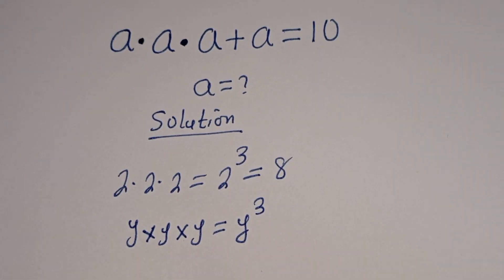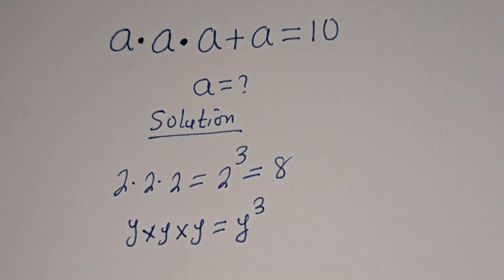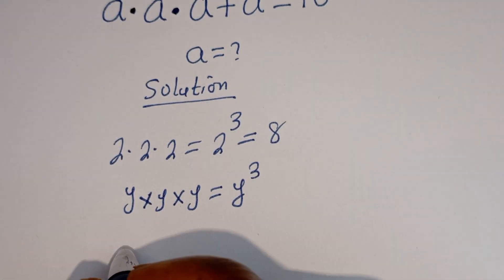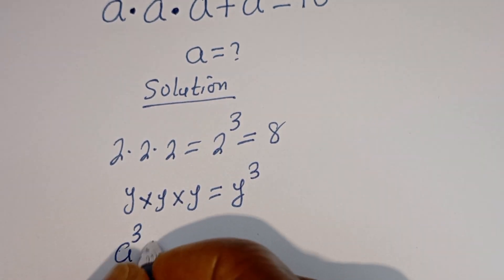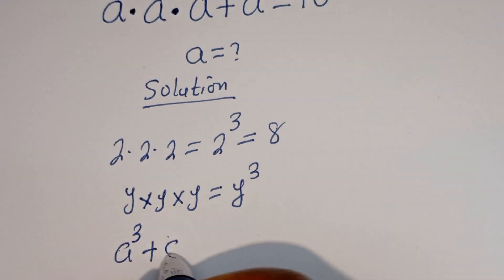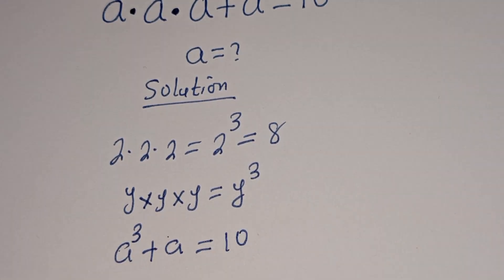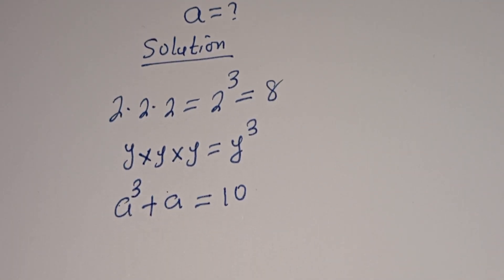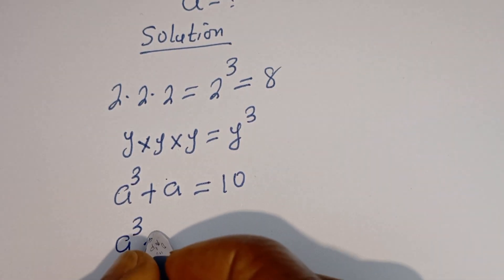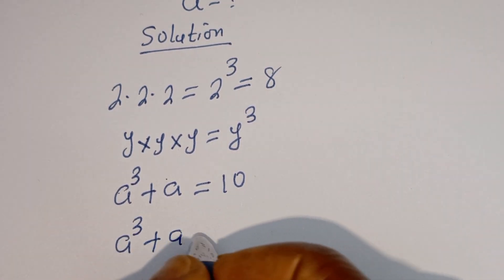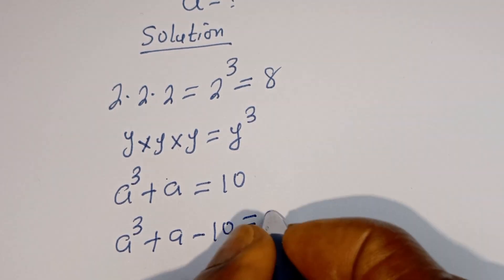Therefore, A multiplied by A multiplied by A is A to the power of 3, plus A is equal to 10. This gives us A to the power of 3 plus A minus 10 is equal to 0.